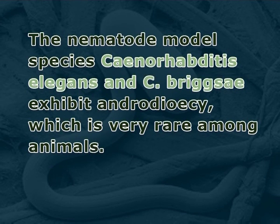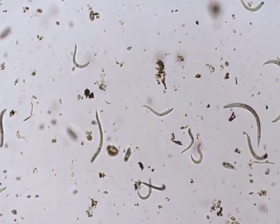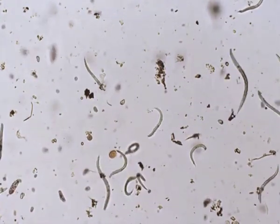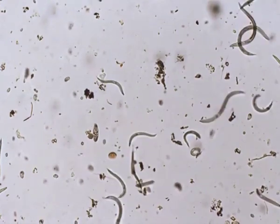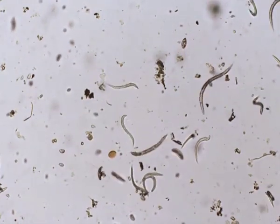The nematode model species C. elegans and C. briggsae exhibit androdioecy, which is very rare among animals. The single genus of root-knot nematodes exhibits a range of reproductive modes, including sexual reproduction, facultative sexuality (in which most but not all generations reproduce asexually), and both meiotic and mitotic parthenogenesis. The genus Mesorhabditis exhibits an unusual form of parthenogenesis in which sperm-producing males copulate with females but the sperm do not fuse with the ovum; contact with sperm is essential for the ovum to begin dividing, but because there is no fusion of cells, the male contributes no genetic material to the offspring, which are essentially clones of the female.